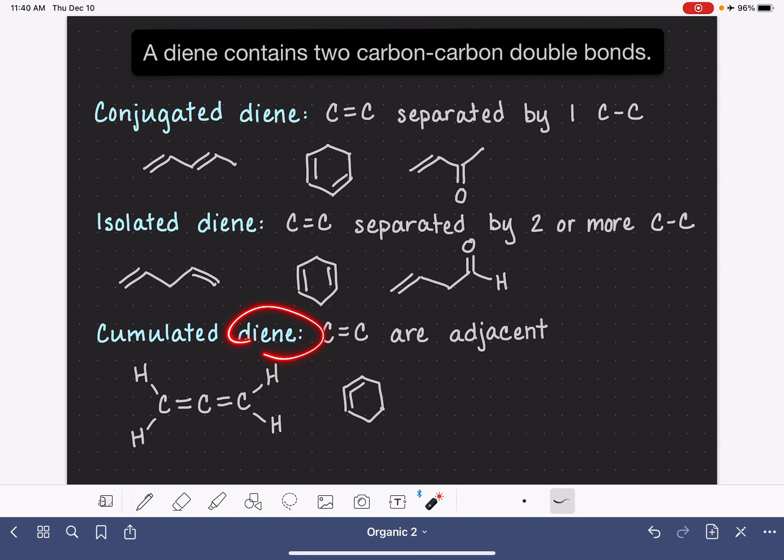The different types of dienes have different levels of stability. The conjugated diene is the most stable type of diene because it's stabilized by resonance and inductive effects. The accumulated diene is the least stable. There's a lot of bad bond angles in accumulated dienes. And the isolated diene is somewhere in the middle in terms of stability.